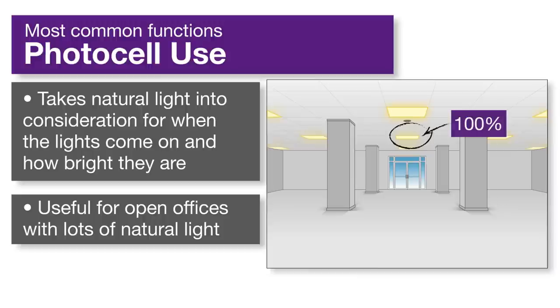In every occupancy sensor there is a photocell. Photocell use takes into account the natural light in the room. It adjusts the lights according to brightness levels.